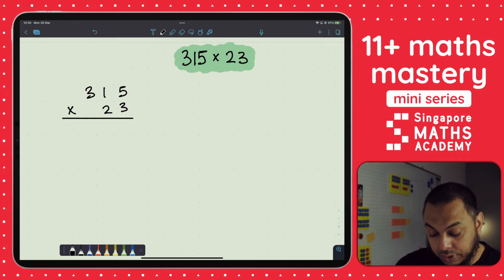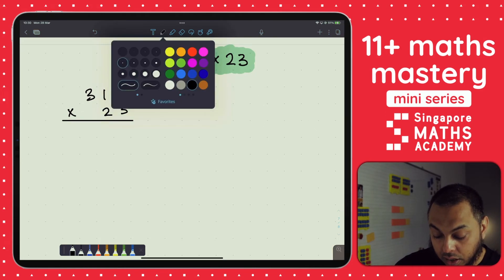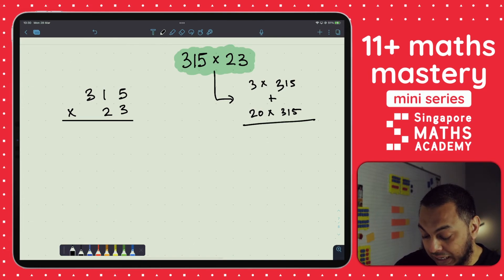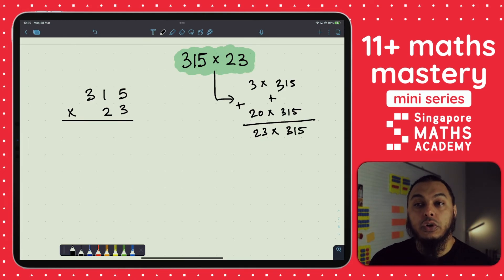So we've got 315 times 23. Just to remind you, just like from our last lesson, what this actually means is 23 lots of 315s or 315 lots of 23s. If we think about this as 23 lots of 315s, then what we're really doing is 3 times 315 add 20 times 315, and together that will give me 23 lots of 315s. That's exactly what we're going to do using the column multiplication method.